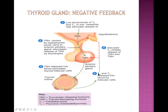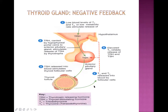T3 and T4 give negative feedback to both TRH and TSH. Negative feedback means if the concentration of T4 and T3 is high, they will block further release of TRH and TSH - that's how they balance each other. Without this mechanism, there would be overproduction of hormone all the time, which would be a big problem for the body.